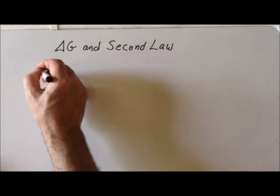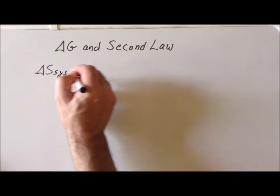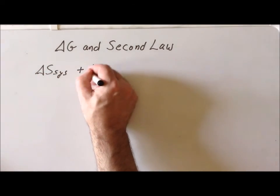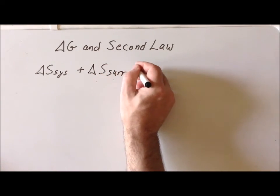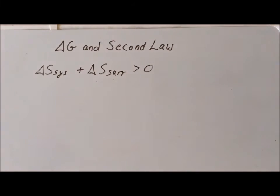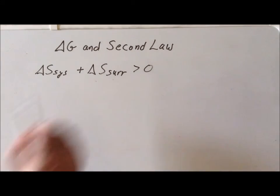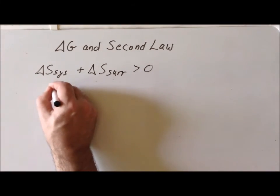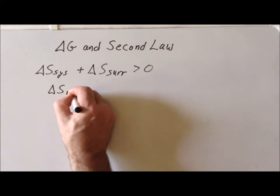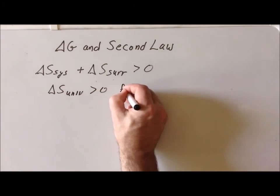Once we've made that substitution, we get the result that delta S of the system plus delta S of the surroundings is greater than zero for a spontaneous process. But here we just use the fact that the system plus the surroundings is simply the universe. So this sum here is just the entropy of the universe greater than zero for a spontaneous process.